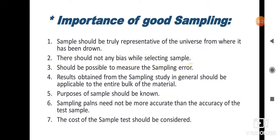Third, it should be possible to measure the sampling error — that means when we do the sampling process we can detect the sampling error. Fourth, the results obtained from the sampling study should in general be applicable to the entire bulk of the material, that is, the universe or the population.